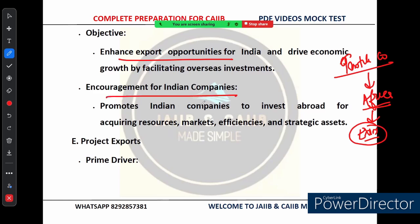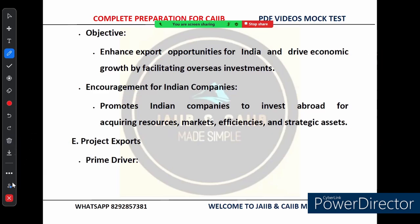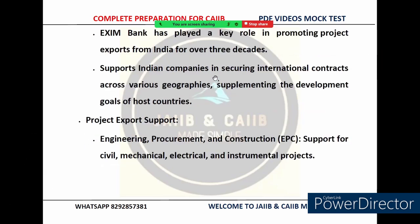EXIM Bank actively encourages Indian companies to invest abroad — whether to secure essential resources, tap into new markets, or gain operational efficiencies. This international presence makes Indian companies more competitive on the global stage. On project exports: EXIM Bank has been a major force in promoting project exports from India for over three decades. By supporting Indian companies in securing international contracts, it not only helps the Indian economy but also contributes to the development goals of the host country.